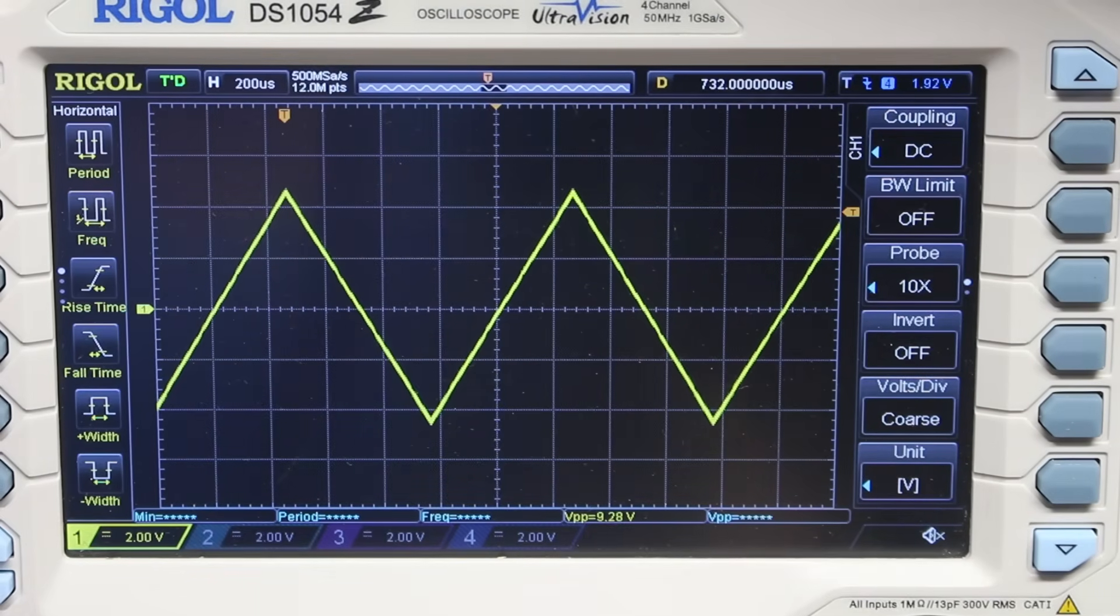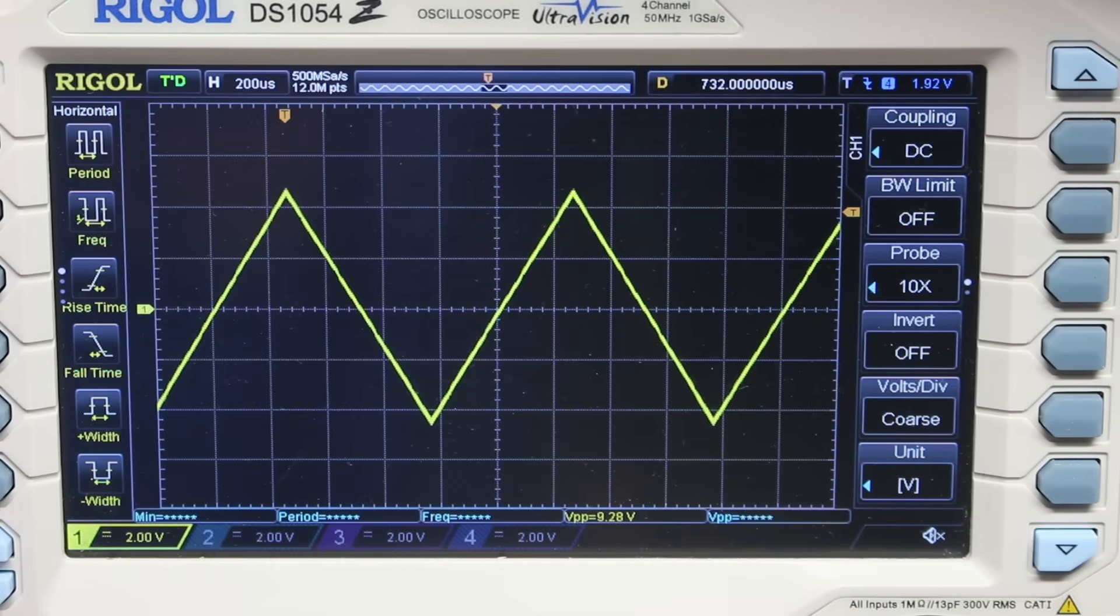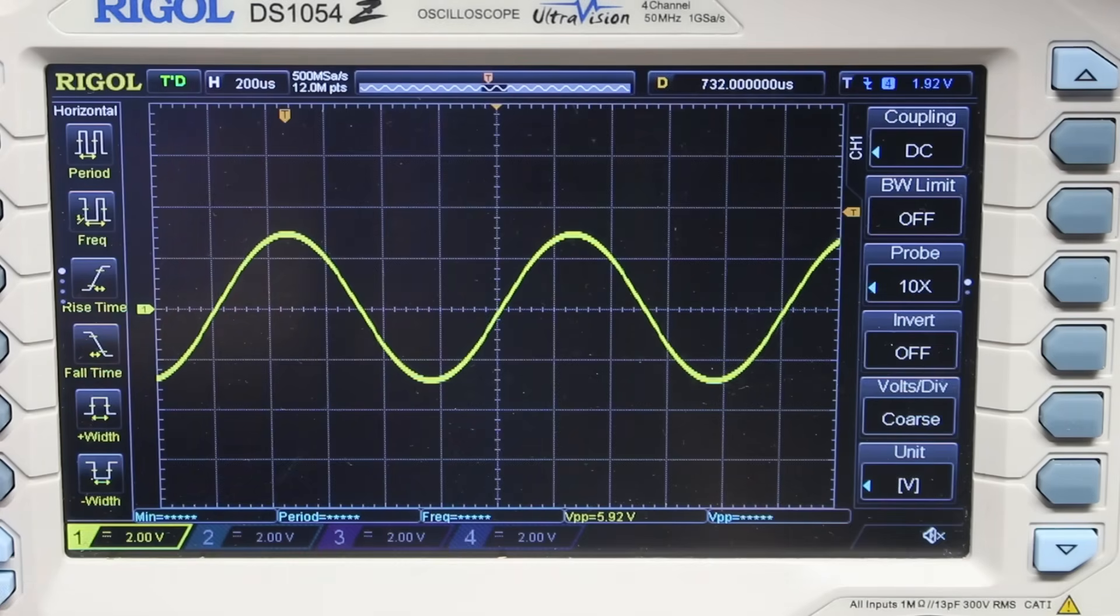Okay, we've got a triangle wave. That's one of the basic sounds that every VCO needs to make. But what I want is a sine wave. After all, Monsieur Fourier has told us that with sine waves we can make any signal we like. How am I going to do that?